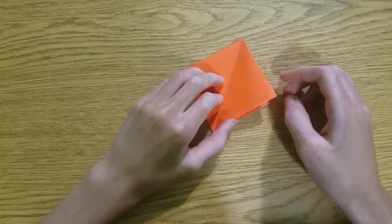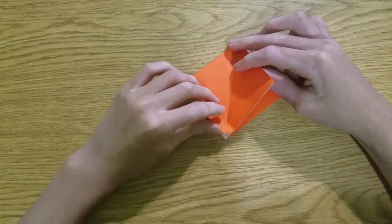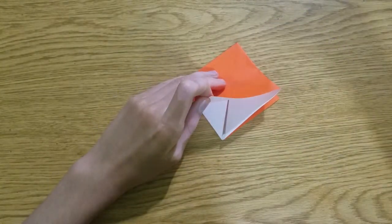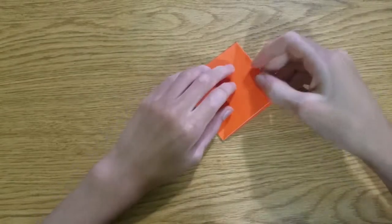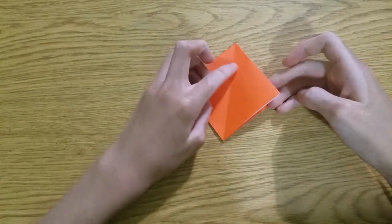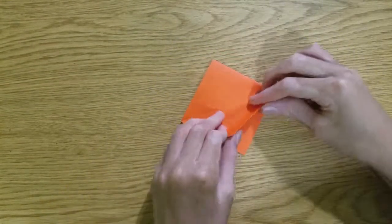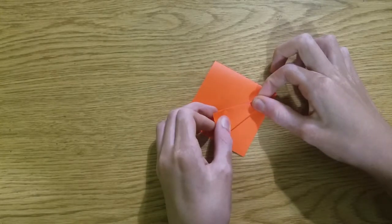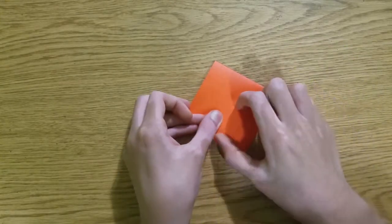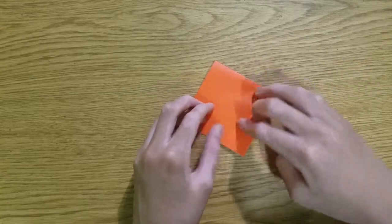Now what we're going to do is take one of the edges. Make sure the open ends are down, and then we're going to align this edge with the middle crease, just like this. Unfold.